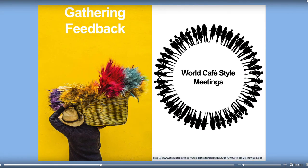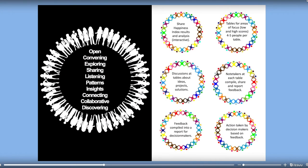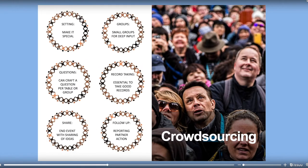Here are some models for gathering feedback. There are two different models. First, World Café style meetings — you bring people together, show them the data, and gather from them what they think should happen to enhance the happiness and well-being of their community, city, country, or company. Another model is crowdsourcing — a blend of crowdsourcing and experts, or just crowdsourcing, where you ask people online or through newsletters: here's the data, here's the report, what do you think should happen? There are all kinds of different models you can use.